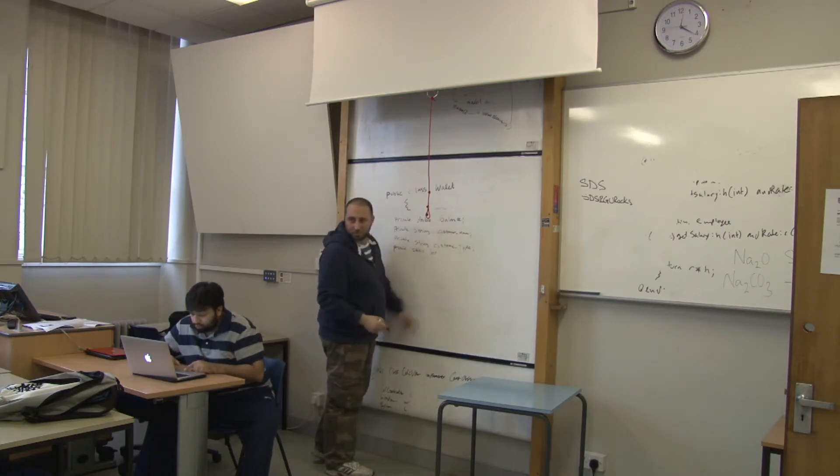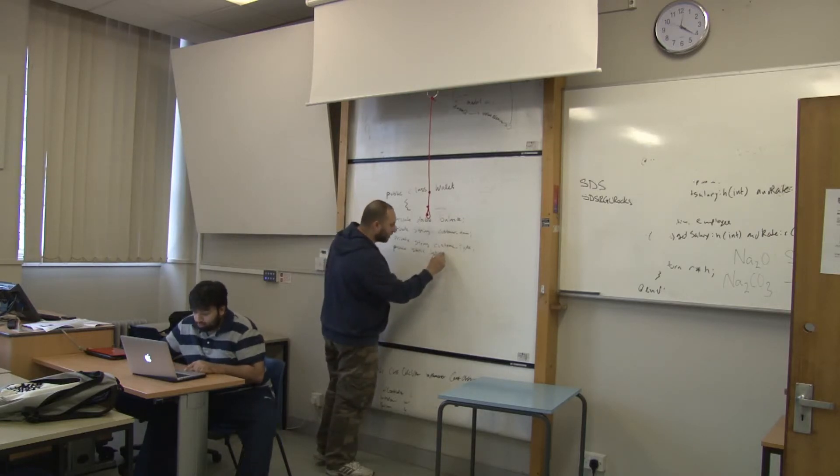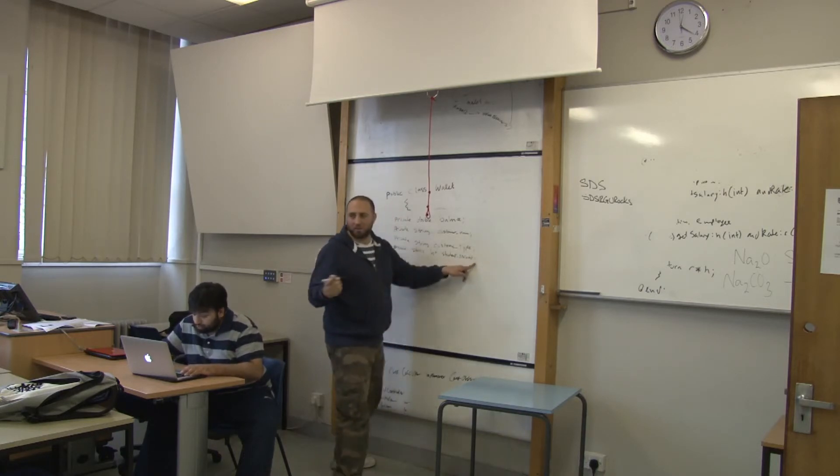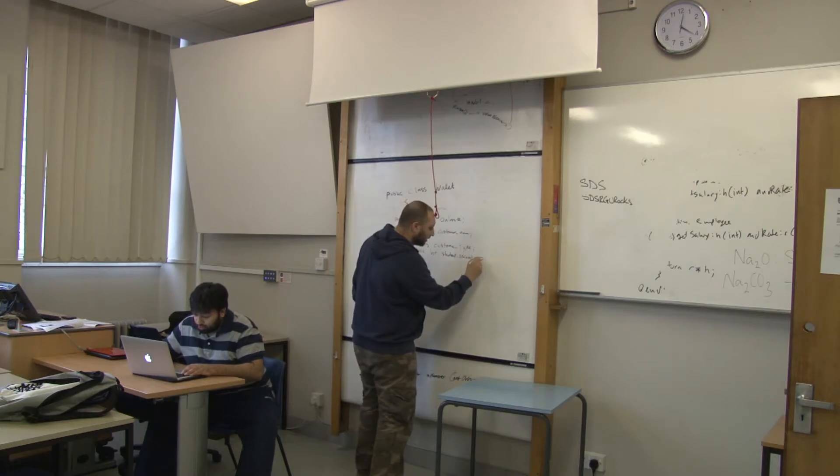And then we say int. And then after that, what do you would say? We'll put customer, so it's discount. Yeah. Student discount. Discount. And now we're going to pass the value. What does it say in the example? It says 20%. Yeah? Then put 20.